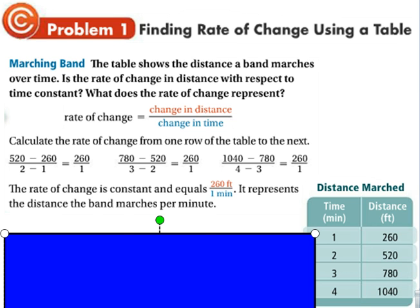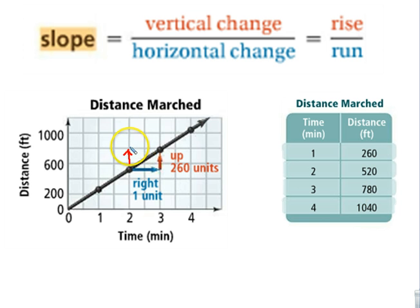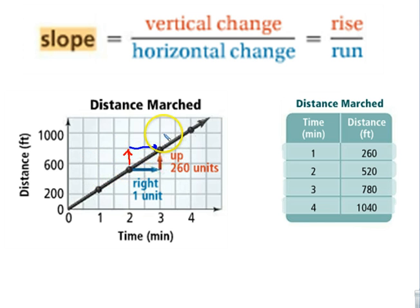Rate of change and slope are the same thing — it's the vertical change over the horizontal change, or the rise over the run. We figure out how it changes up and down first, then the run. The red part is the rise and the blue part is the run. Each time it goes up 260 and over 1 — that's how we find the slope or rate of change.